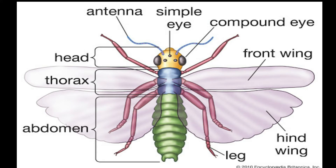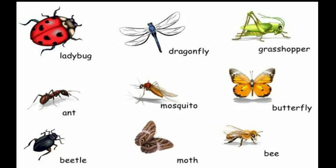Insects are tiny creatures having six legs. They have three basic body parts such as head, thorax, and abdomen. Insects have feelers called antennae. Most of the insects, like butterflies, house flies and mosquitoes, have wings and can fly.